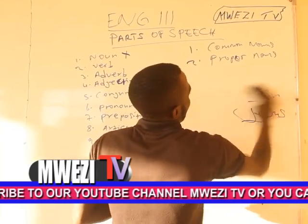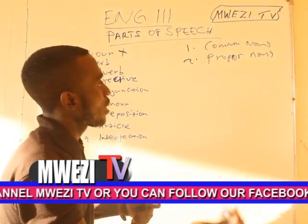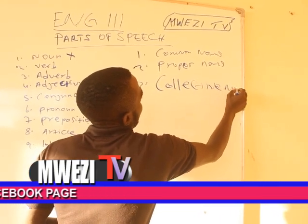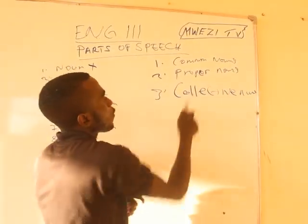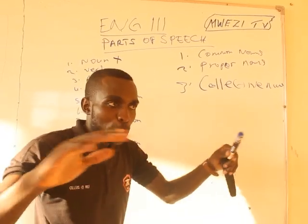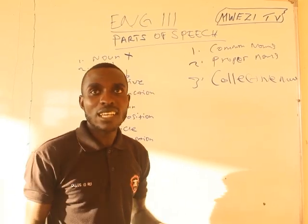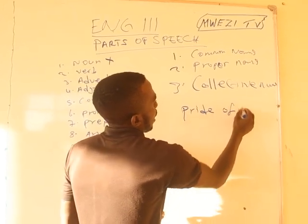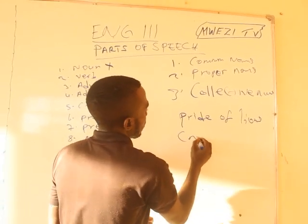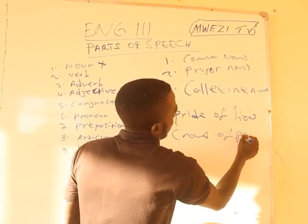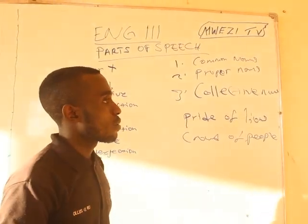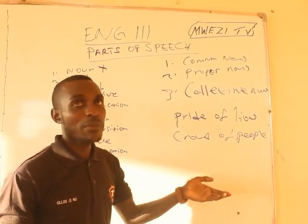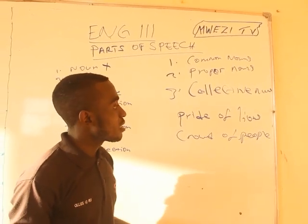Finally, let me introduce you to collective nouns, which we'll continue at an appointed time. Just like the word itself — 'collective' — we're talking about a collection of things grouped together. For example, a group of lions is called a pride. A group of people is called a crowd. A group of baboons is called a parliament of baboons. And a bunch of flowers is another example.